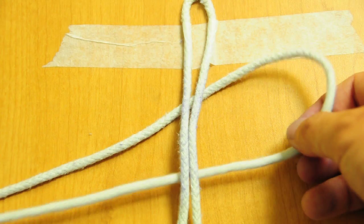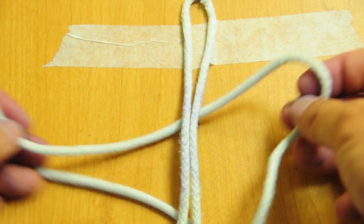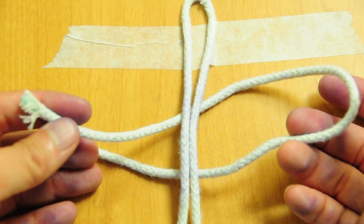So what happens is you leave a loop here, kind of like this, and a free end like this, and you're going to be tying the two together.